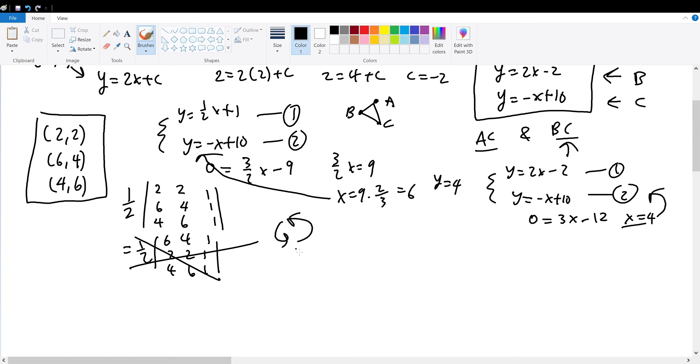So if you really wanted to show yourself if your thing was correct, then just graph it out roughly. (2,2) will be here, (6,4) will be somewhere here, and (4,6) will be somewhere here. So this will be (2,2). This will be (6,4). This will be (4,6).